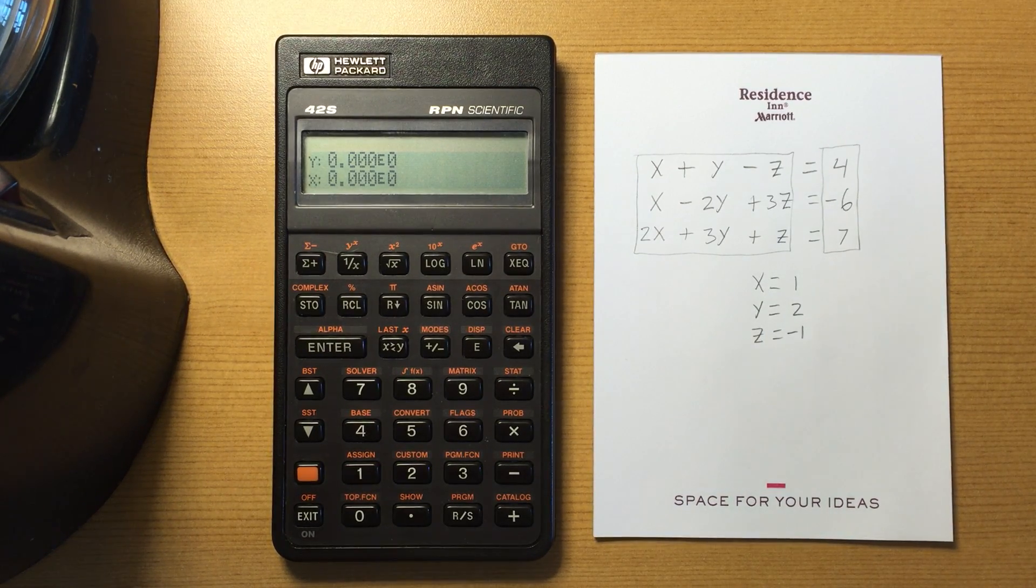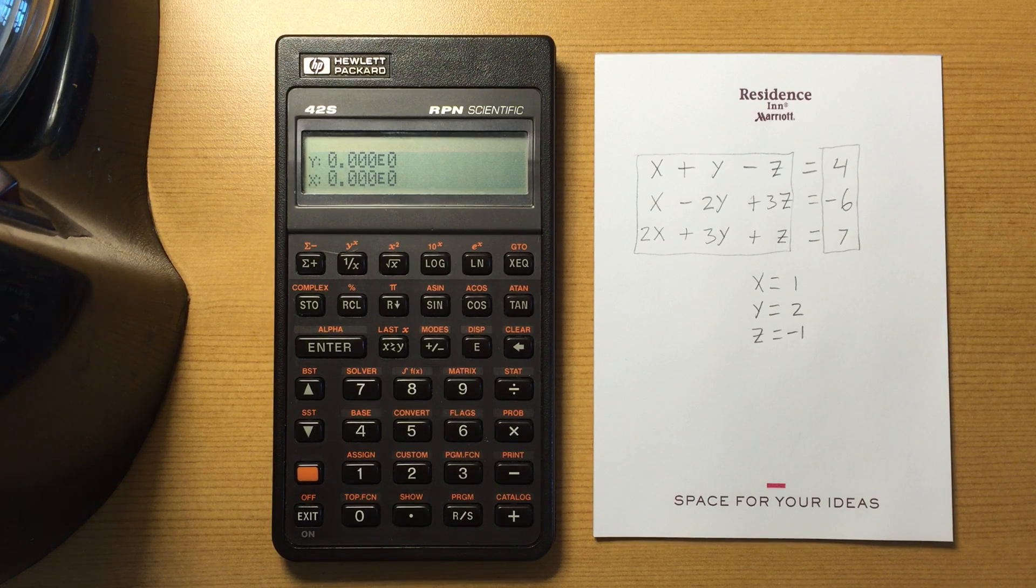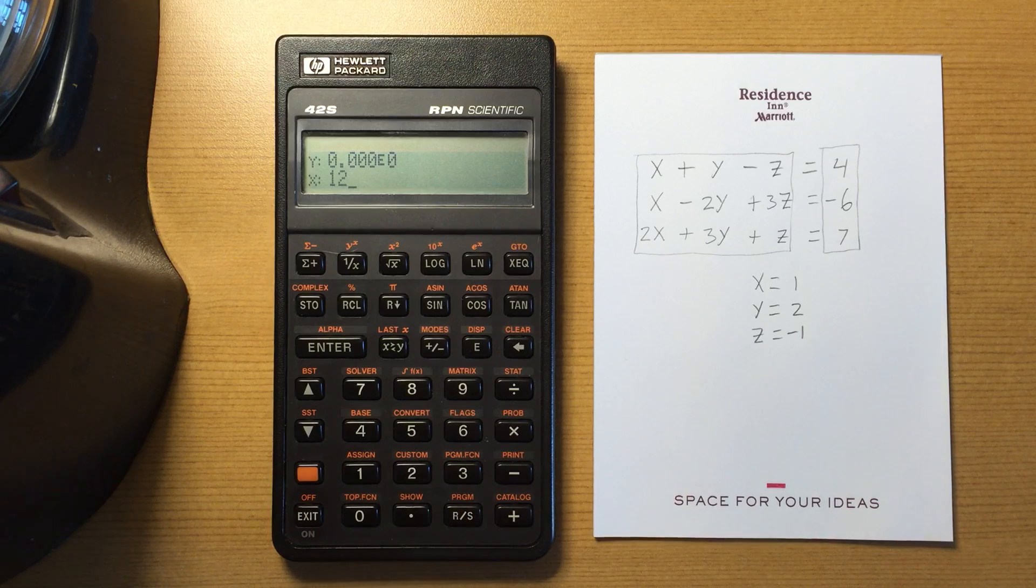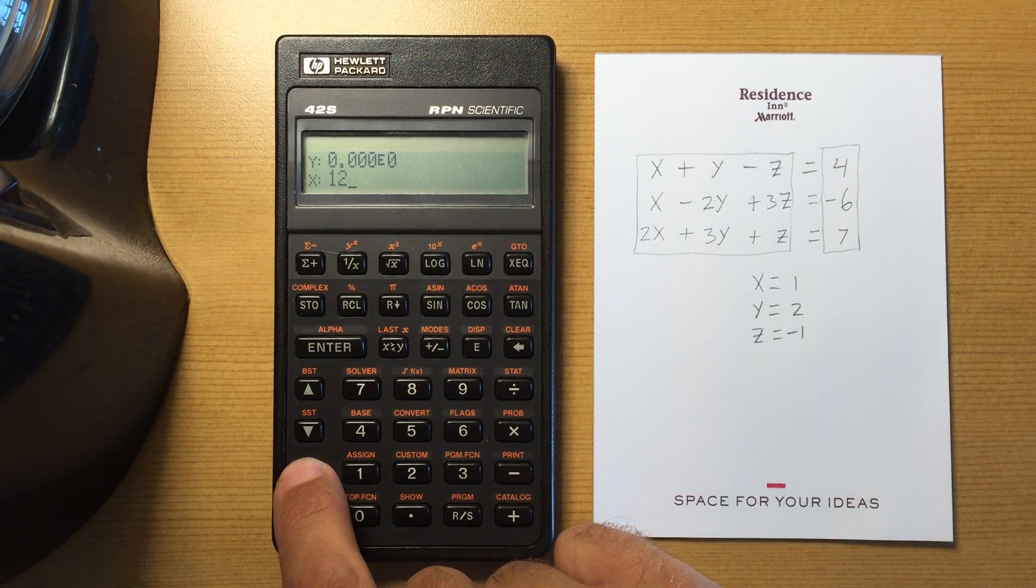Now I'd like to talk a little bit about doing base conversions. This actually makes more sense to me than it does on the HP 35s. So, for example, I enter in a decimal number and then...